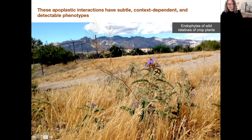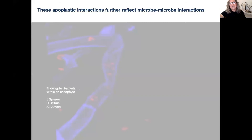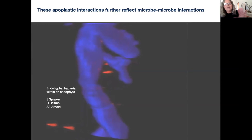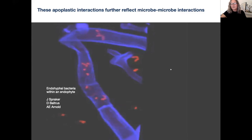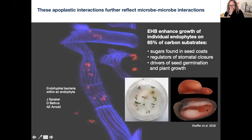However, there are challenges. Not all plants will accept the same endophyte, and we see this through two lenses. The first is that interactions can be driven by additional hidden components of these symbioses: the endohyphal bacteria that live inside the endophytes themselves. An image from Joe Spreaker shows the outside of a fungal hypha, and zooming in we can see beautiful fluorescing bacteria on the inside. In removal experiments, we've been able to see that endohyphal bacteria enhance growth of individual endophytes on the majority of carbon substrates we look at, including sugars found in seed coats, regulators of stomatal closure, and drivers of seed germination and plant growth.